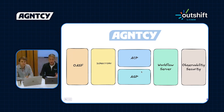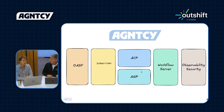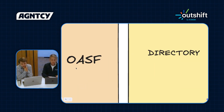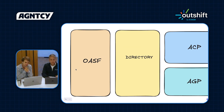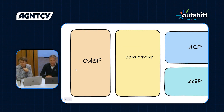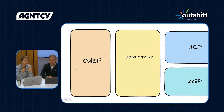We'll start talking about the components that we released. The first one is the OASF. People have probably heard of an OpenAPI specification — this is kind of similar, but for agents. It describes metadata about the agent, its capabilities, and some information about how we want to deploy that agent. Essentially a standardized spec for what an agent is.